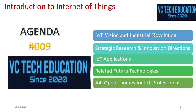Internet of Things supports a lot in industry for safety, security, production and even for distribution. Hope you all understood the major concepts of IoT in the session ASH009 — Introduction to Internet of Things. In the next class ASH010 we are going to discuss the Automobile Industry and how Internet of Things, Sensors and Actuators support the Automobile. Thank you very much.